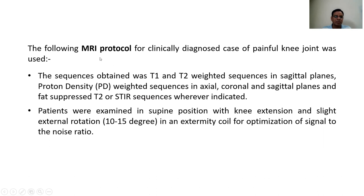The MRI protocols used included T1 and T2-weighted sequences in sagittal planes, proton-density-weighted sequences in axial, coronal, and sagittal planes, and fat-suppressed T2 sagittal sequences. Patients were examined in supine position with knee extension and slight external rotation of 10 to 15 degrees, using an extremity coil.